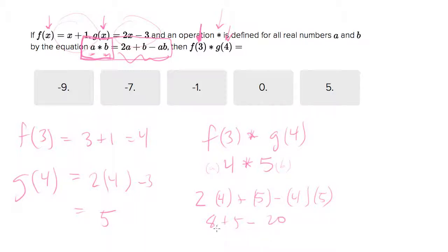So 2 times 4 is 8 plus 5 minus 4 times 5 is 20. 8 plus 5 is what? 13 minus 20 is negative 7. So that's your answer, the second option.